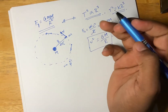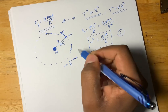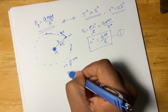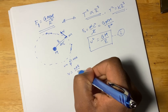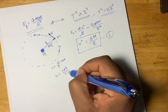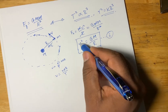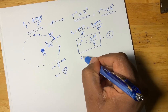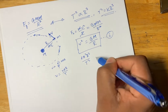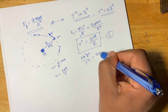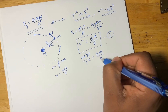We know the circumference is 2πr. So velocity equals 2πr over T. Taking the square: 4π²r² over T² equals G times the big mass M over the radius.